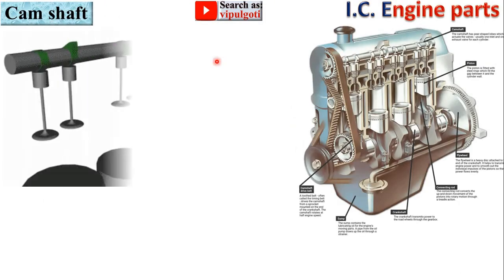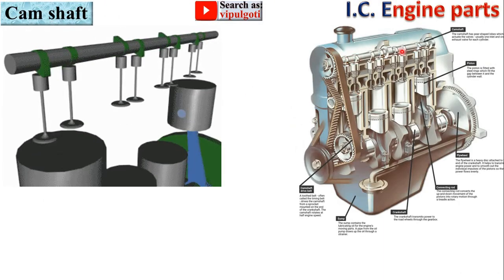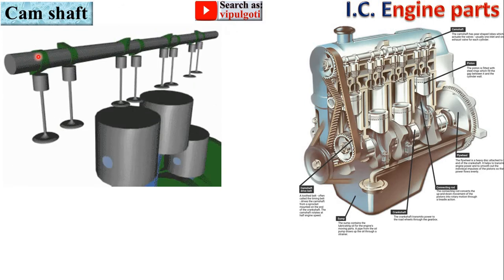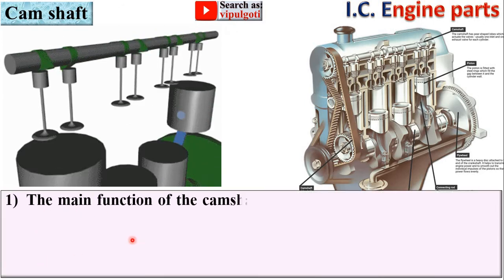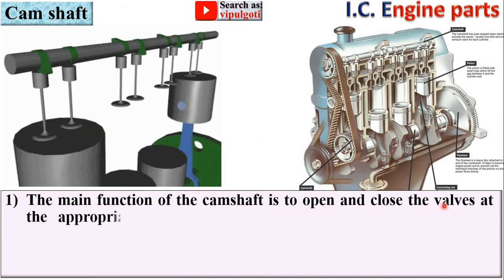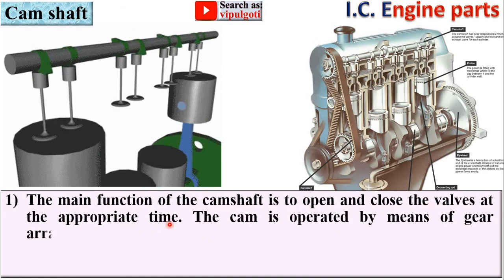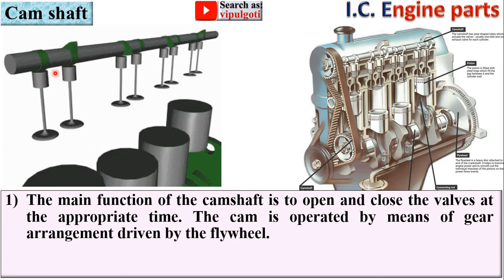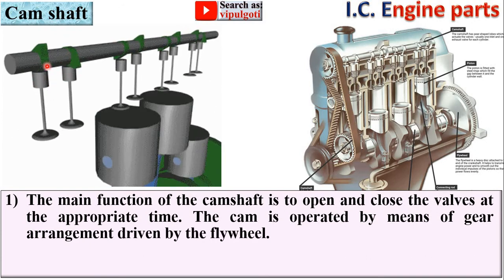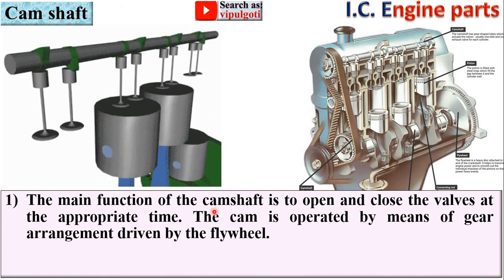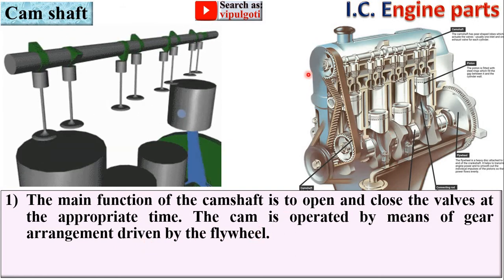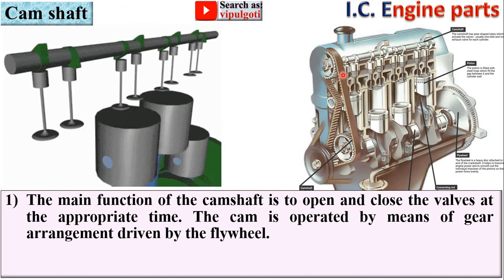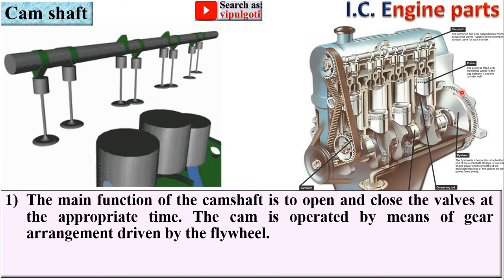Next: camshaft. Here you can see this is the camshaft, and in the animation, the camshaft has cams mounted on it. The main function of the camshaft is to open and close the valves at the appropriate time. The intake valve and exhaust valve are operated by the cams mounted on the camshaft. The camshaft is operated by means of a gear arrangement and timing belt driven by the flywheel.